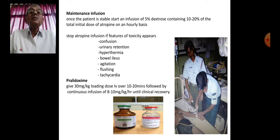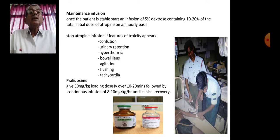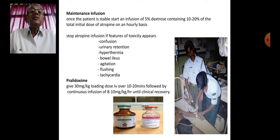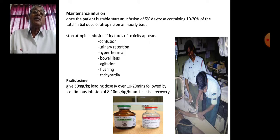Once the patient is stable, maintain atropine by infusion: start an infusion of 5% dextrose containing 10 to 20% of the total initial dose, infused on an hourly basis. Stop atropine infusion if features of toxicity appear: confusion, urinary retention, hyperthermia, bowel ileus, agitation, flushing, or tachycardia.